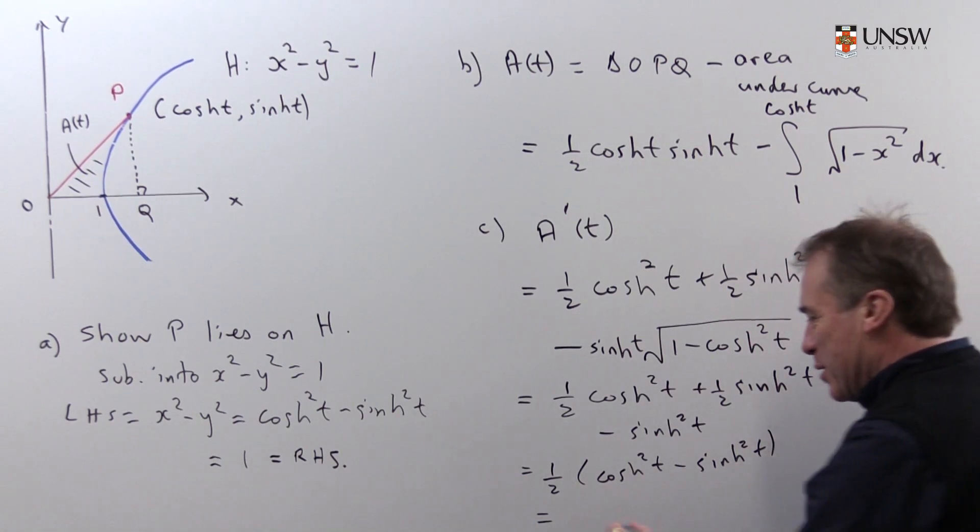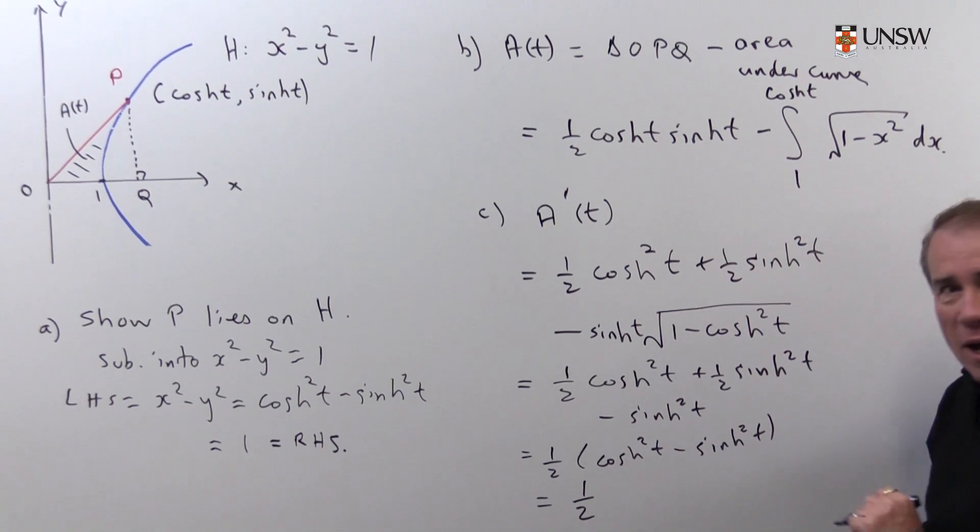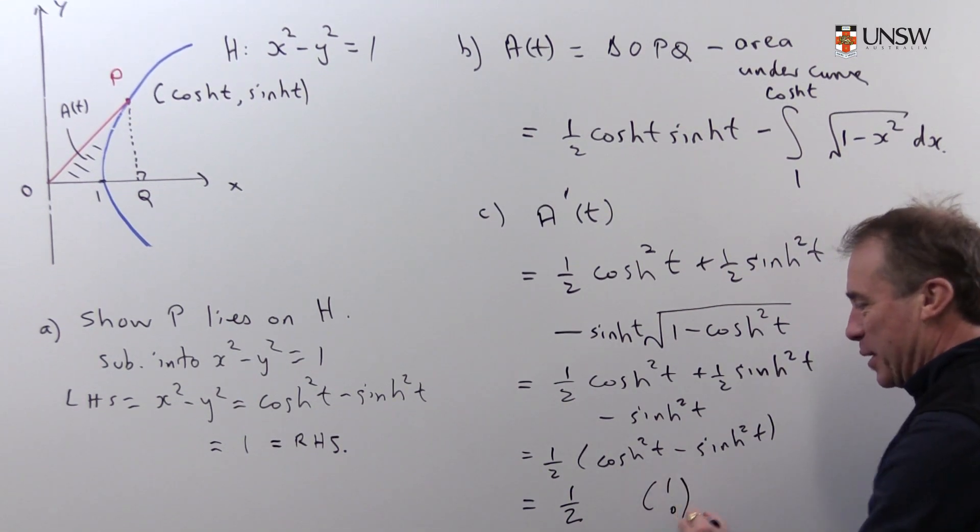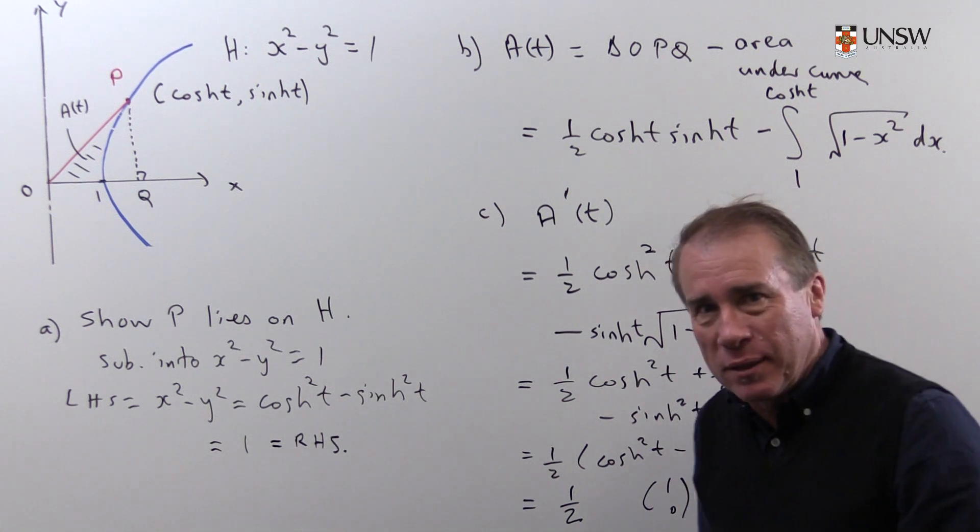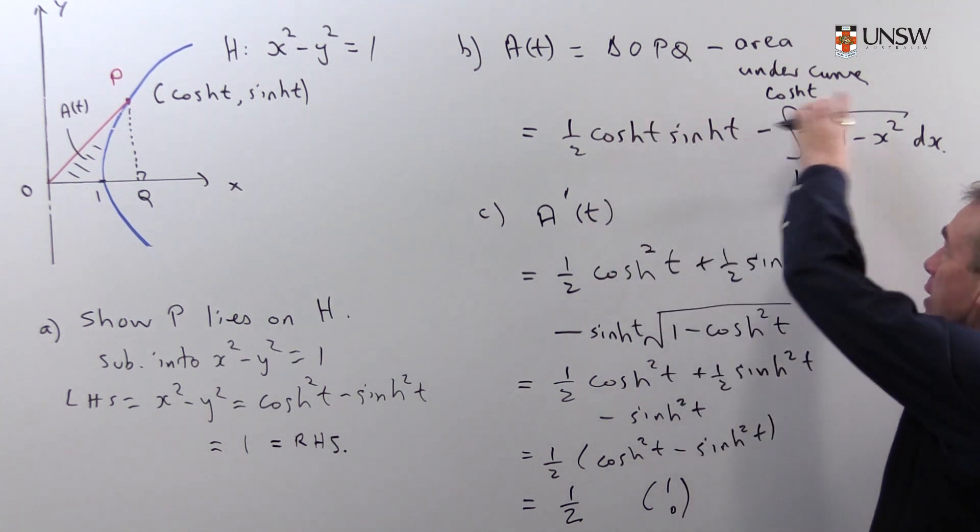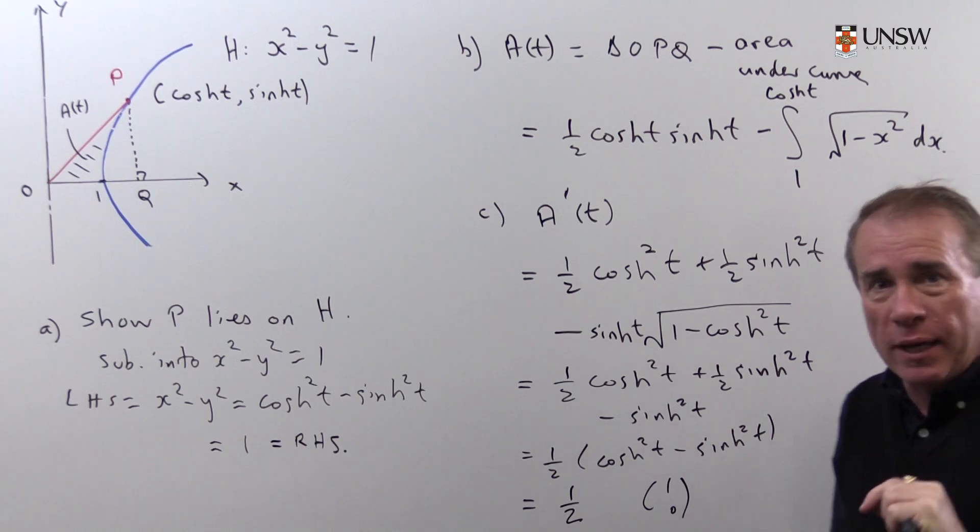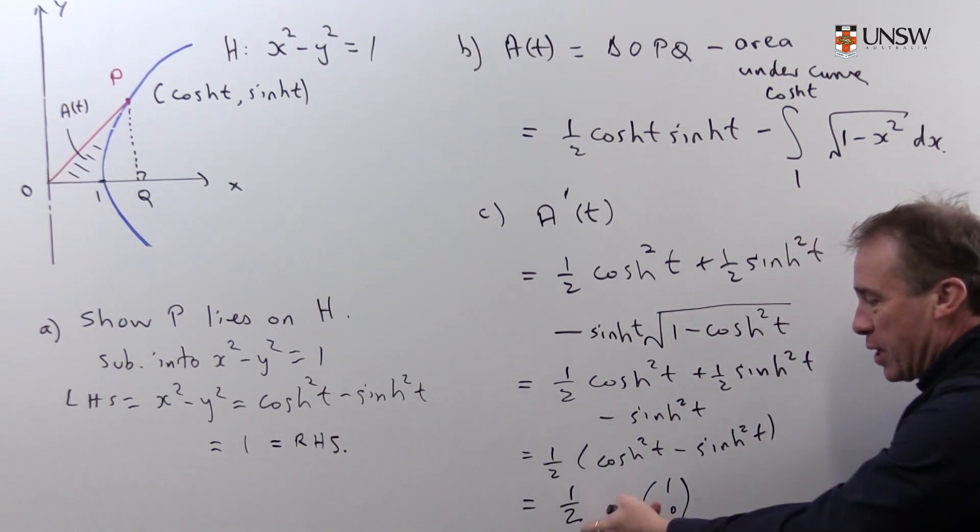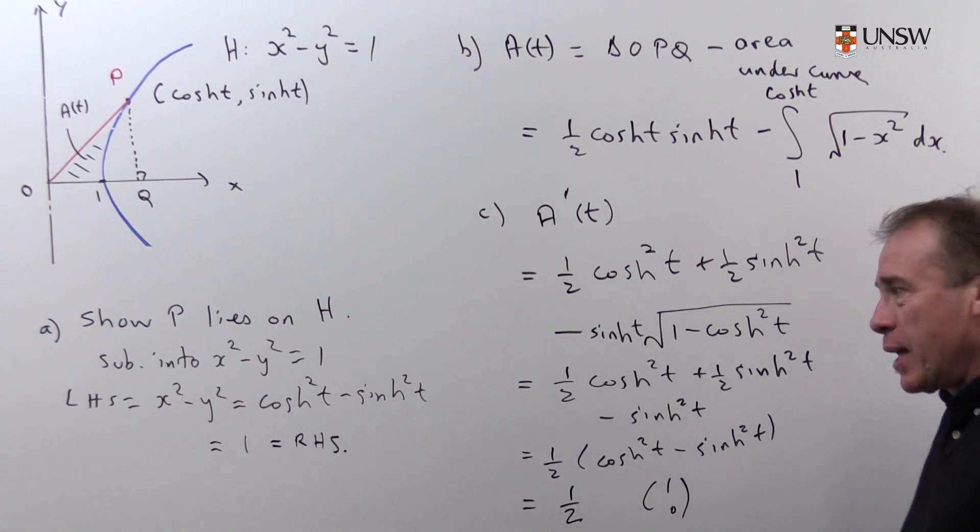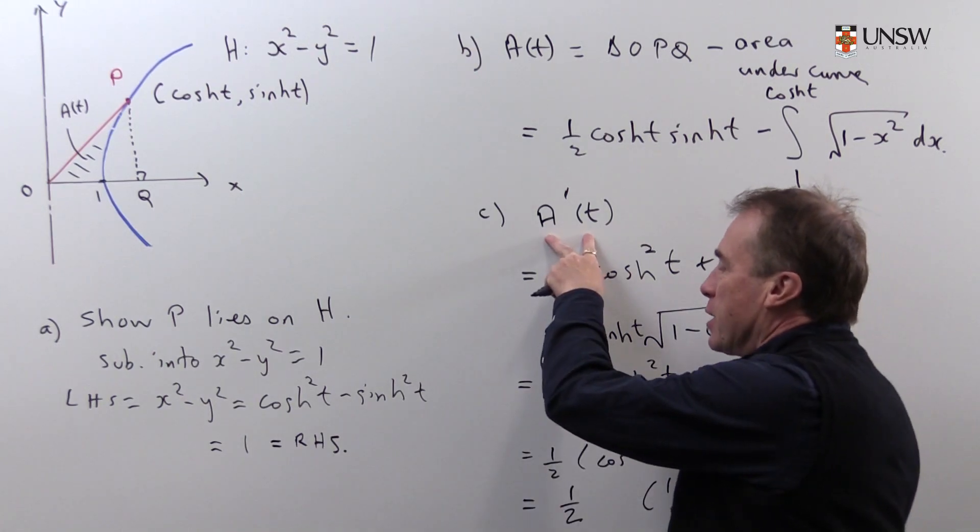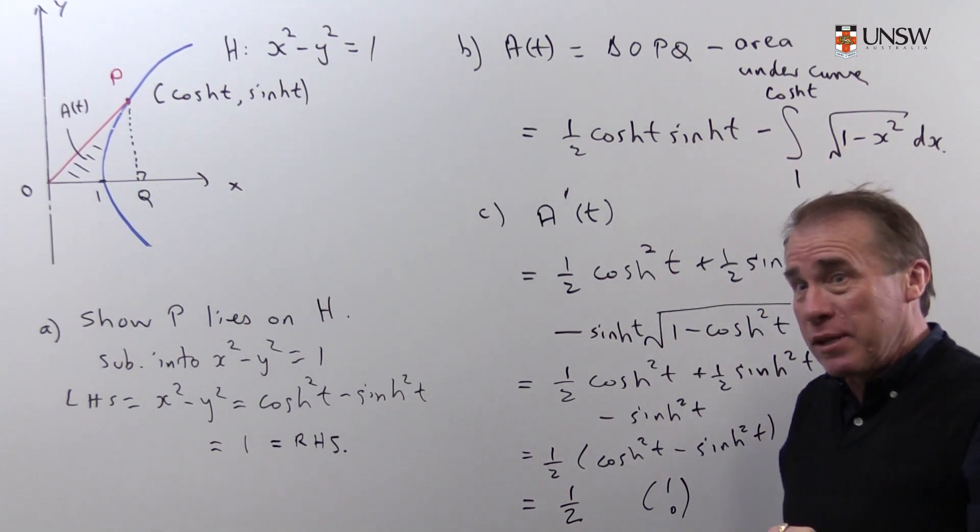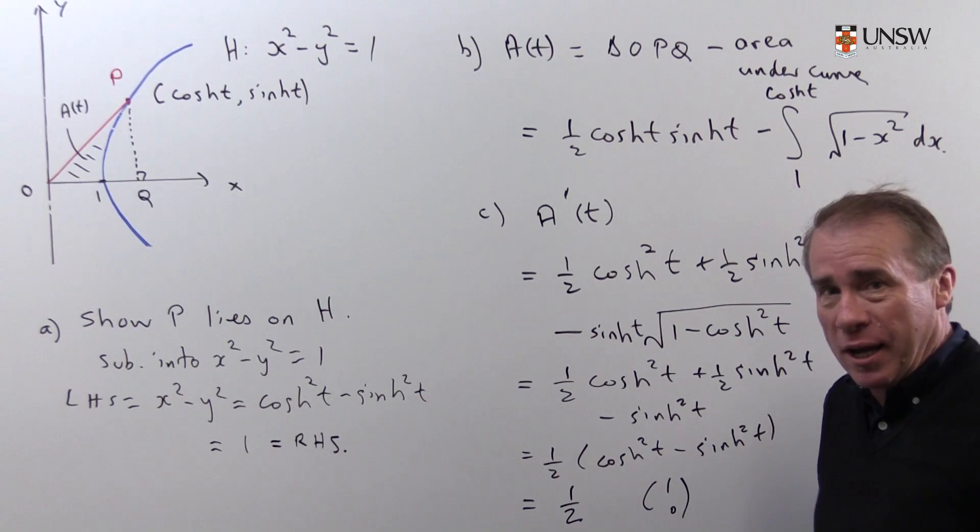And then, I hope to your great surprise, it certainly was to mine, out comes a half. I'm going to put a little exclamation mark there because that's very surprising. You start off with this very complicated looking formula here for this area, and when you take this derivative, out comes a half, because that means I can recover A of t now by integrating, not by having to do this complicated integral, but doing a very easy integral just integrating a half.